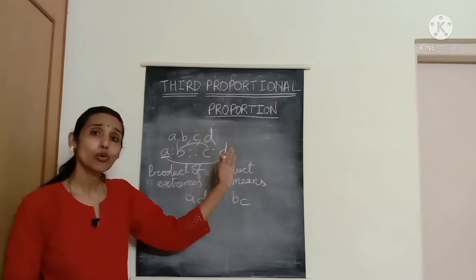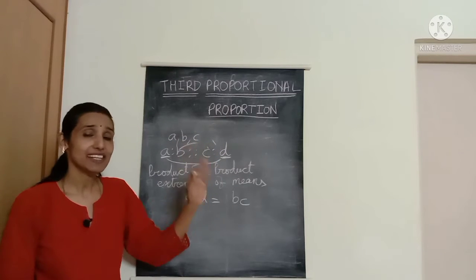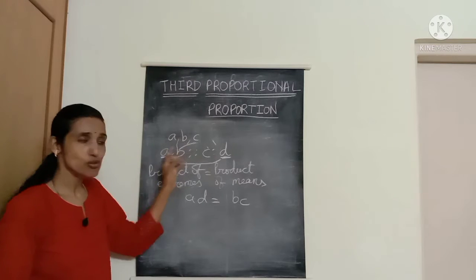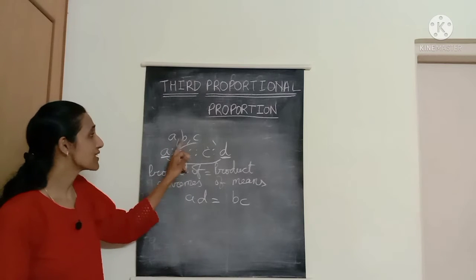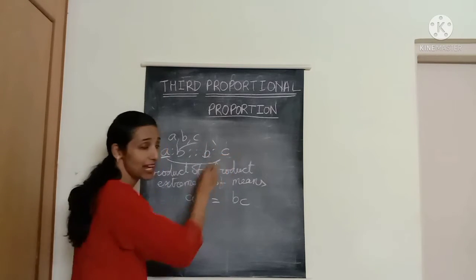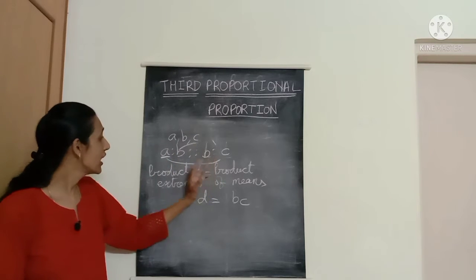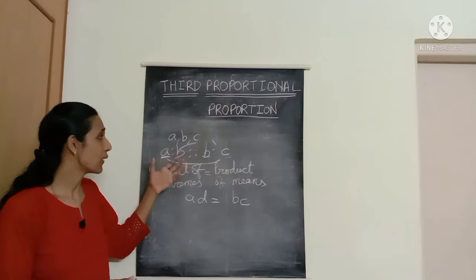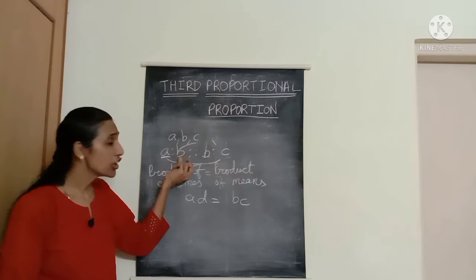Many times, instead of four quantities being in proportion, only three quantities may be in proportion — A, B and C. In that case, the ratio of A to B equals the ratio of B to C. Notice that B is repeated in both ratios. That's why these three quantities are also said to be in continued proportion, because B is continuing in both ratios.